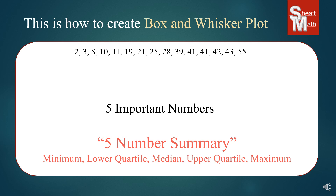I first find the minimum, and that's the lowest number in the set of data — two. Then I find the maximum, which is the highest number. Then I find the median, the one that's right in the middle of this data. So if I count from the outside in with both fingers, I end up right there on 25. So 25 happens to be my median.